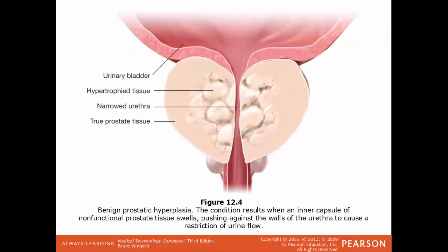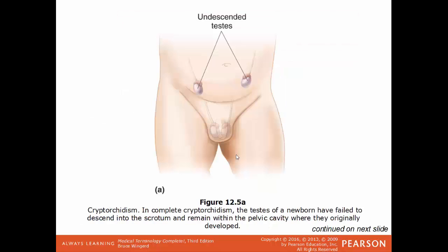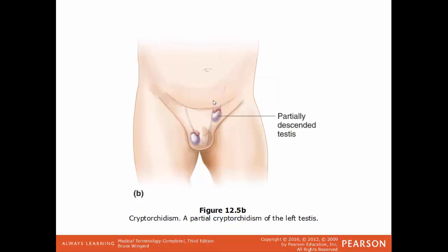BPH involves an overdevelopment of cells of the prostate gland. As extra cells are made, the prostate gland ends up squeezing on the urethra — this is why men with prostate issues feel like they have to urinate constantly. In cryptorchidism, the testes normally descend outside the body by birth, but in this condition they remain in the abdomen or pelvic cavity. In partial cryptorchidism, one testes descends properly but the other does not.